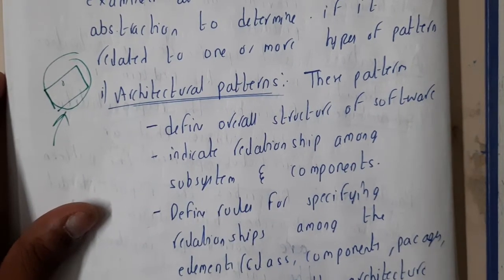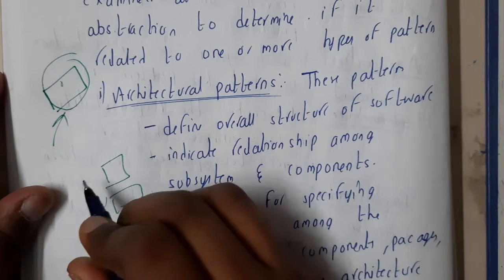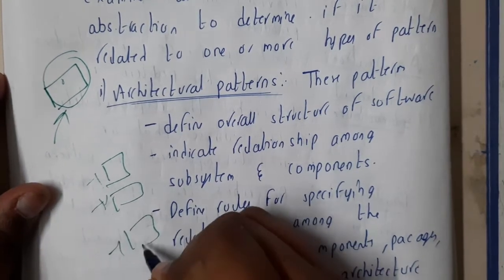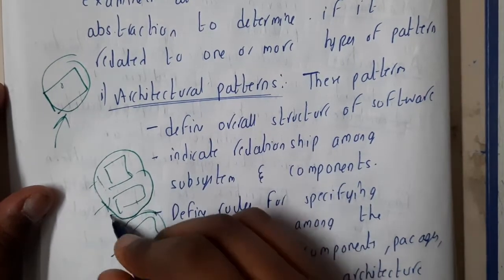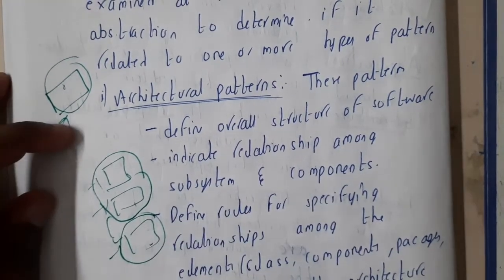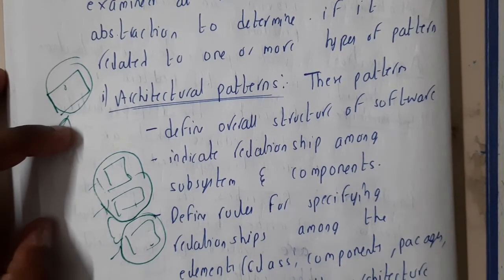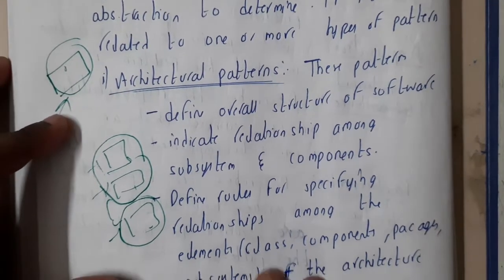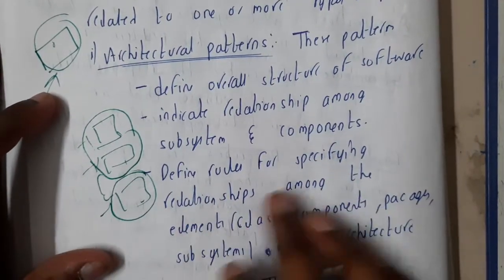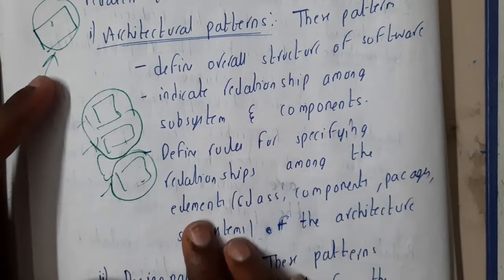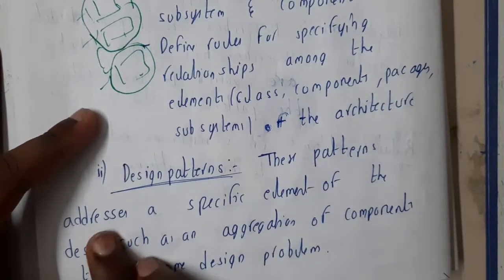If your previous modules were designed for one programming language and now you are using a different one, you can use the reference but you cannot use the same pattern directly. That is why the structural aspects should be almost the same. Architectural patterns also indicate relationships among subsets and components, and define rules for specifying relationships among the elements.